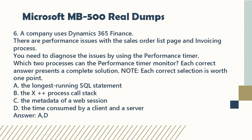Question 6. A company uses Dynamics 365 Finance. There are performance issues with the sales order list page and invoicing process. You need to diagnose the issues by using the performance timer. Which two processes can the performance timer monitor? Each correct answer presents a complete solution. Each correct selection is worth 1 point. A. The longest-running SQL statement. B. The X++ process call stack. C. The metadata of a web session. D. The time consumed by a client and a server. Answer: A, D.